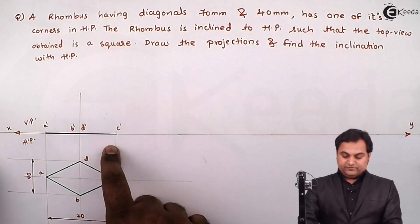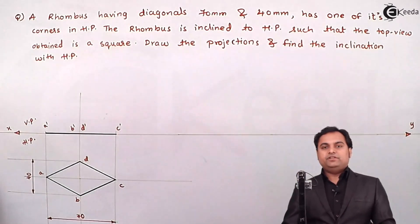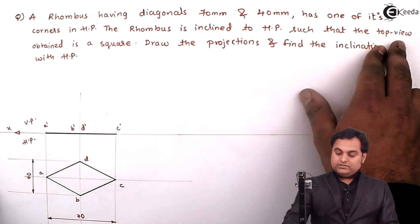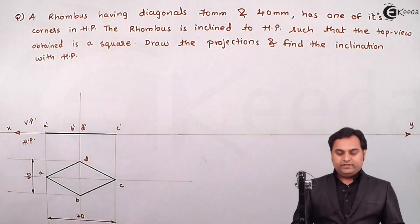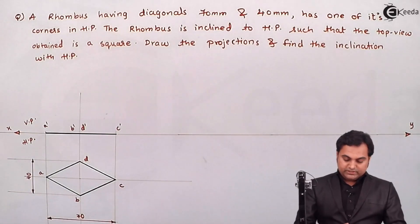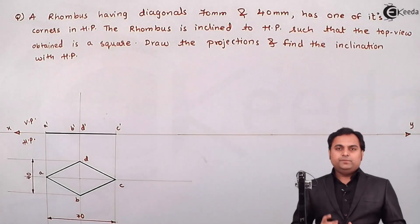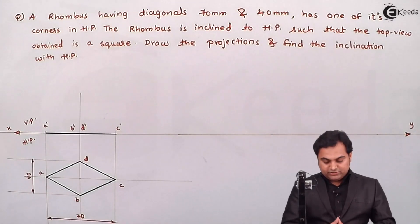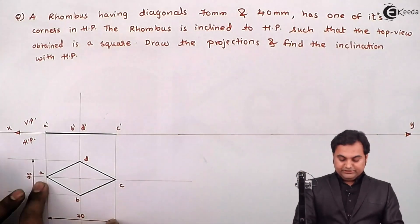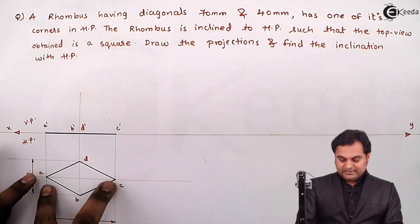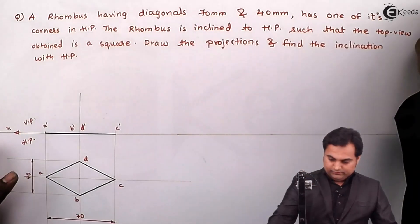This is the top view and here is the front view. The next condition is that this rhombus is inclined to HP, so the inclination with HP will be visible in VP, such that the top view obtained is a square. To get a square, the diagonals AC and BD must be equal. So I'll keep BD constant and, fixing point A, I'll lift point C so that AC reduces and becomes equal to BD.